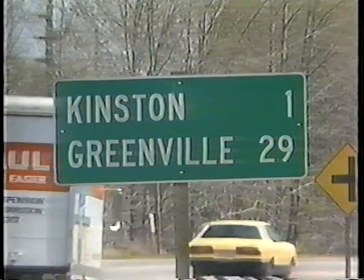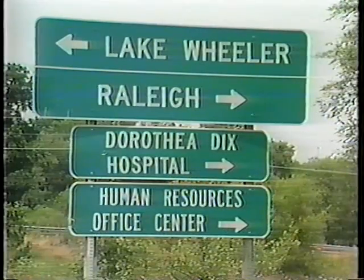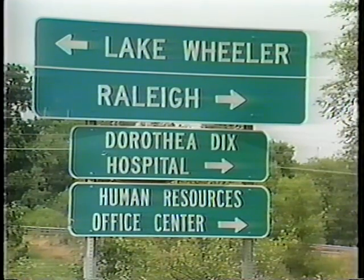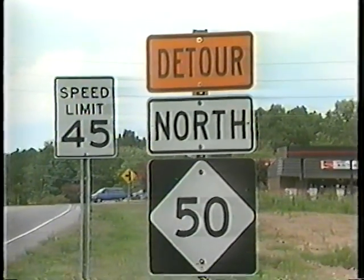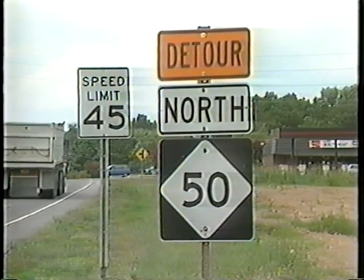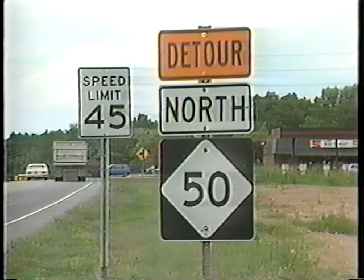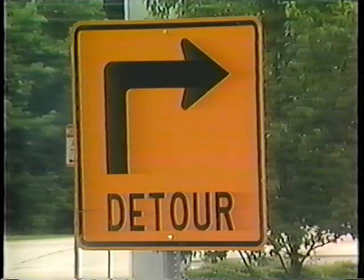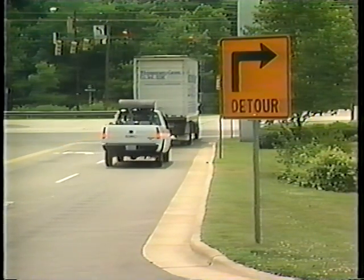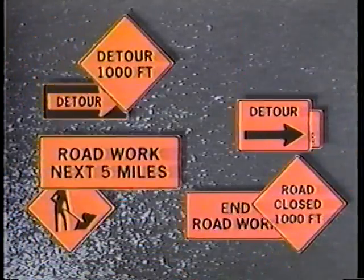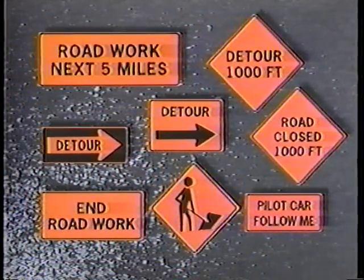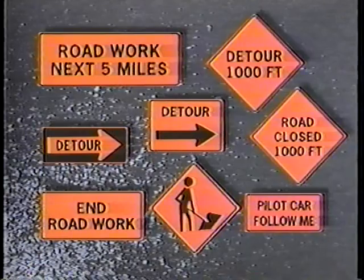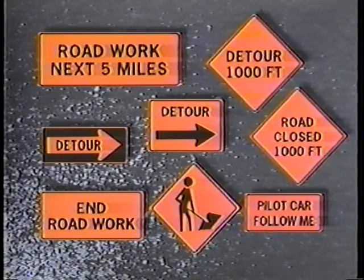Guide signs show destinations, directions, services, points of interest, and other geographical or cultural information. Informational signs are required at work zones for standard route markings when temporary route changes are necessary. Directional signs and street name signs used with detour routing may have a black legend on an orange background. Special information signs relating to the work being done also have a black message on an orange background — examples include road work next five miles, end road work, detour, and pilot car follow me.